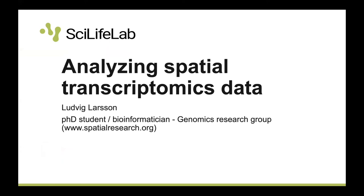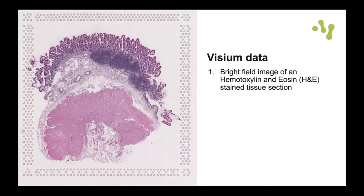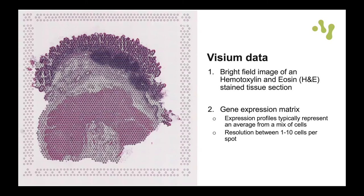To give you some intuition of what a Visium dataset looks like: you have a bright-field H&E-stained tissue section image — in this case from a small intestine biopsy — which provides detailed morphological information at high resolution. The other part of the dataset is the gene expression matrix. Little circles on the tissue represent spots where mRNA is captured; as you can see, each spot covers a few cells. So each spot represents an average expression of a mixture of cells — this is really important to keep in mind.